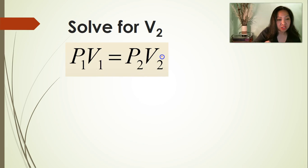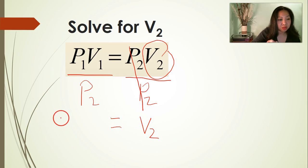Solve for V2. Divide both sides of the equation by P2 in order to isolate V2. Cancel that. That leaves us with V2 equals P1 times V1 divided by P2.